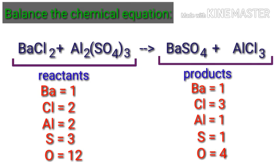If we look at this equation, we can see that the equation is not balanced. On the reactants side, there are 1 barium atom, 2 chlorine atoms, 2 aluminum atoms, 3 sulfur atoms, and 12 oxygen atoms.